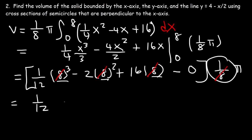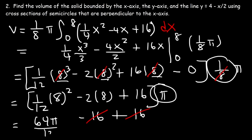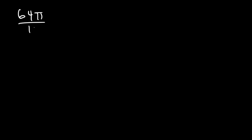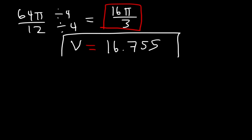After distributing, we get one-twelfth times 8 squared, minus 2 times 8, plus 16, all multiplied by pi. That simplifies to pi times (64/12 minus 16 plus 16). The minus 16 and plus 16 cancel, leaving 64 pi over 12. Dividing numerator and denominator by 4 gives 16 pi over 3. The decimal value is approximately 16.755, which is the volume of the solid.